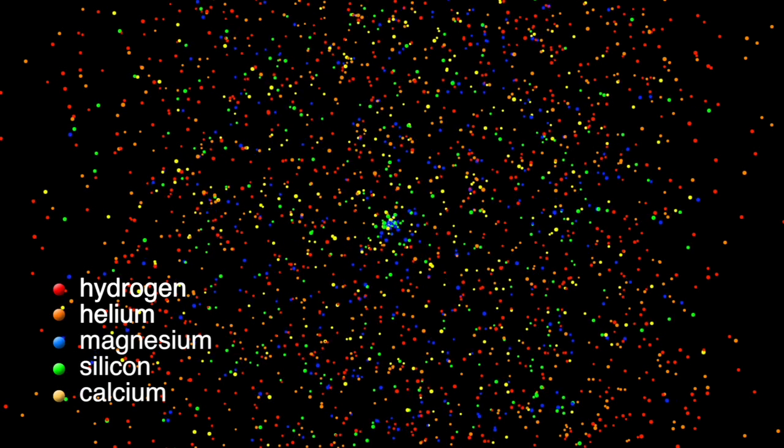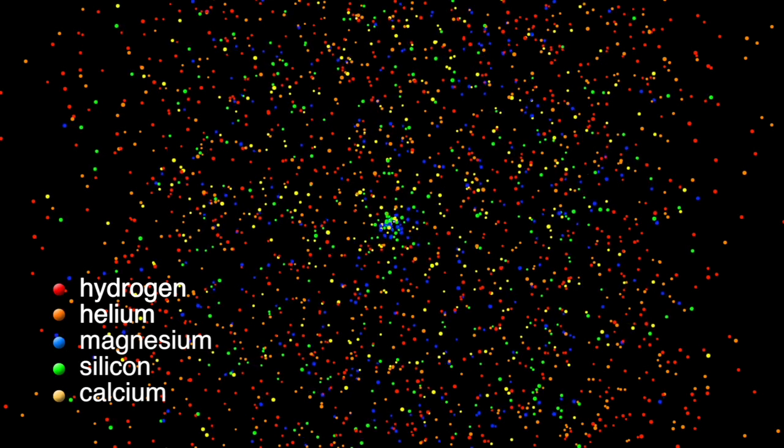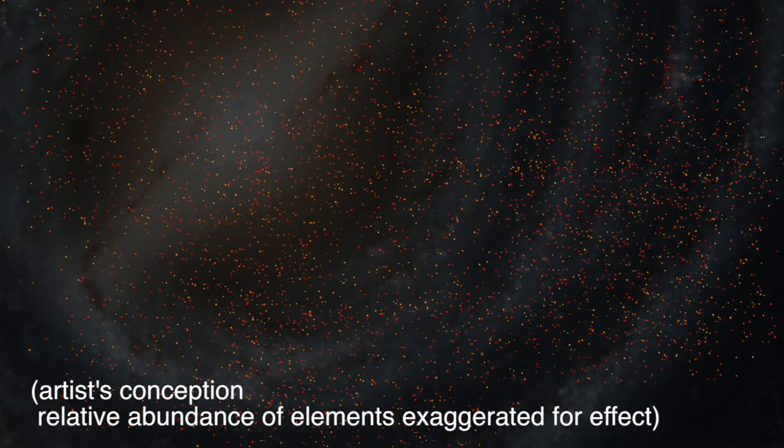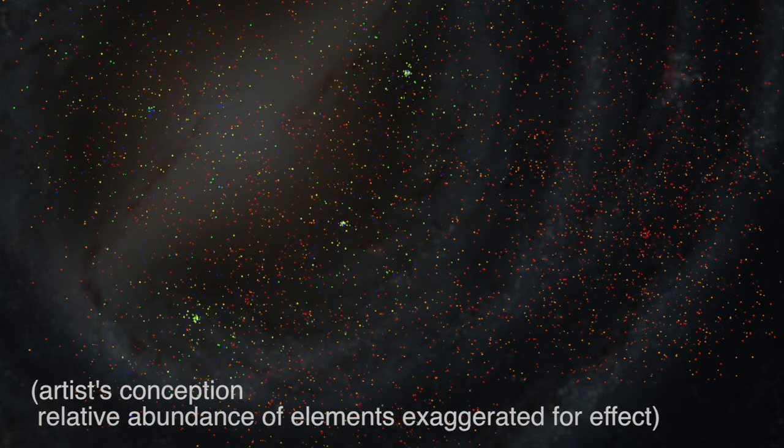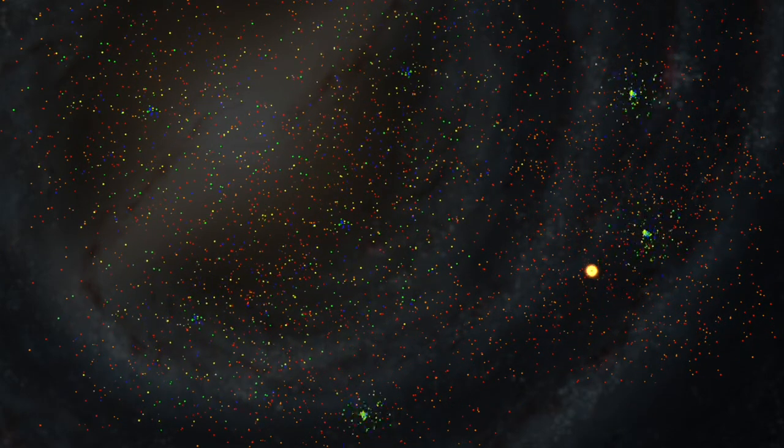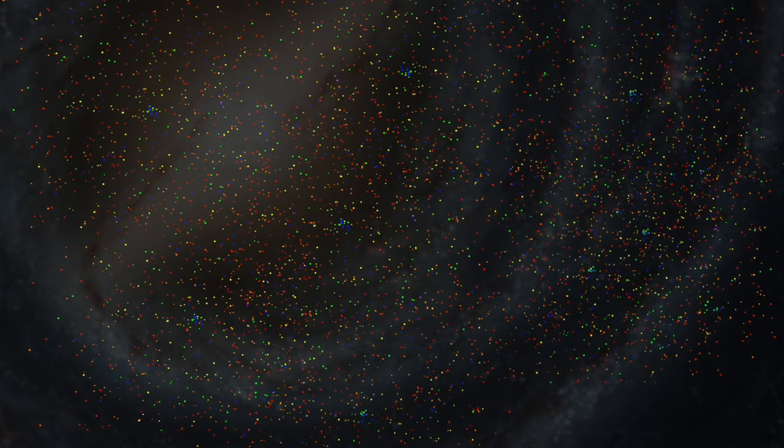The first supernovas to blow up from the most massive stars produced elements like magnesium, silicon, and calcium. In most galaxies, this process is cyclical, with each generation of stars contributing more heavy elements to the raw material from which the next set of stars will be born.